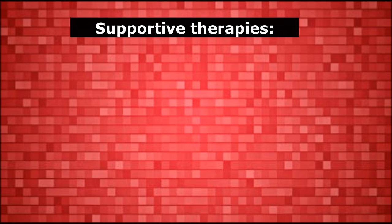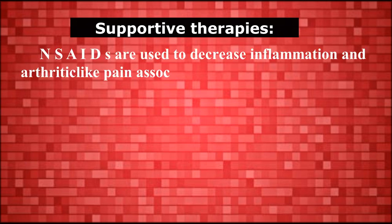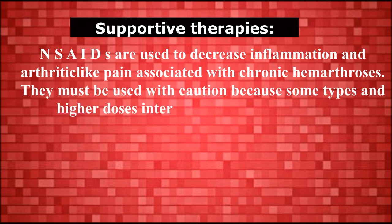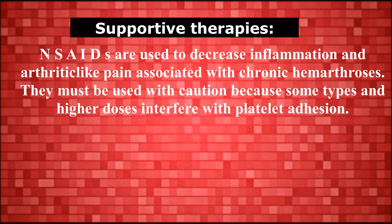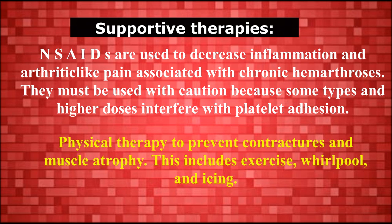Supportive therapies include NSAIDs to decrease inflammation and arthritic-like pain associated with chronic hemarthrosis, though they must be used with caution because some types and higher doses interfere with platelet adhesion. Physical therapy to prevent contractures and muscle atrophy is also important.